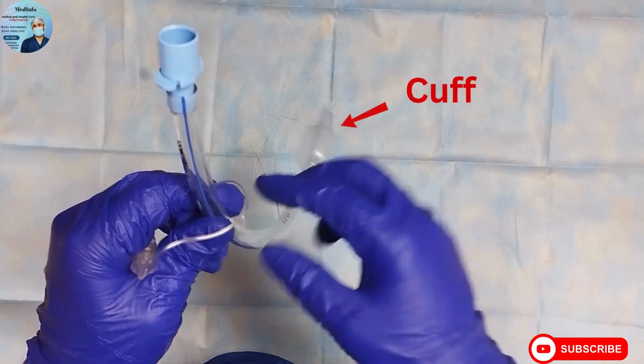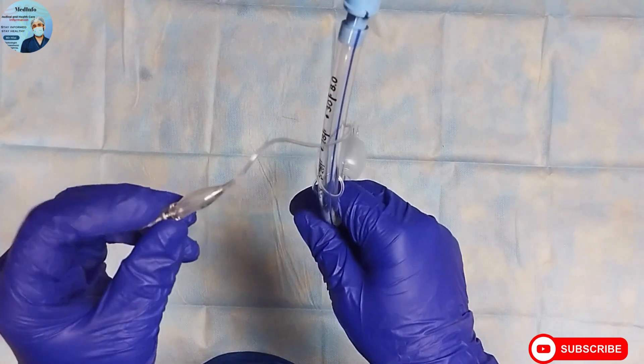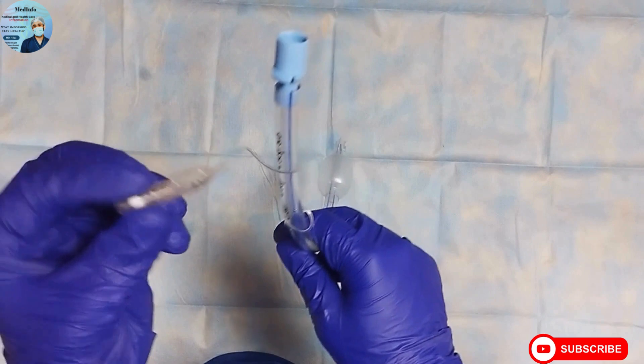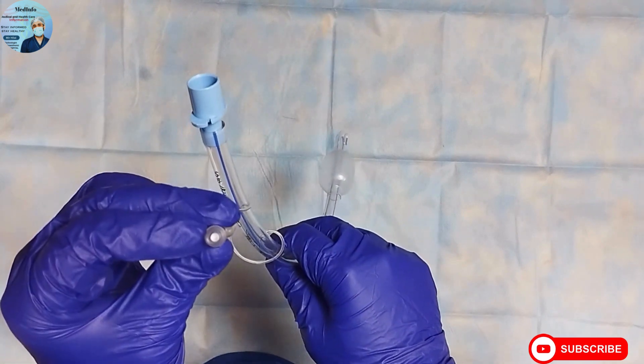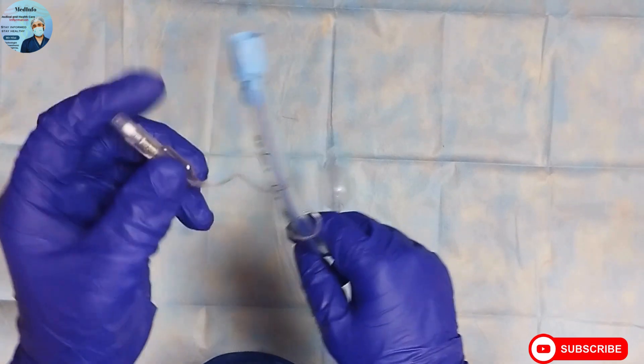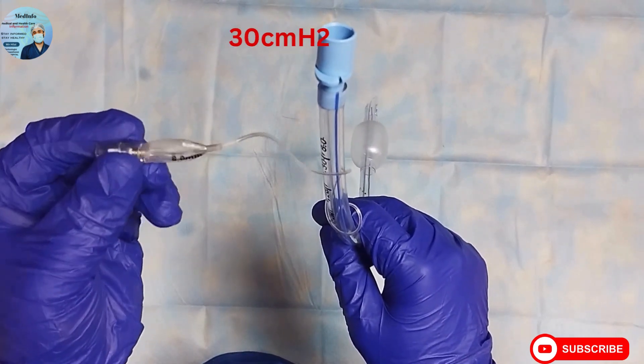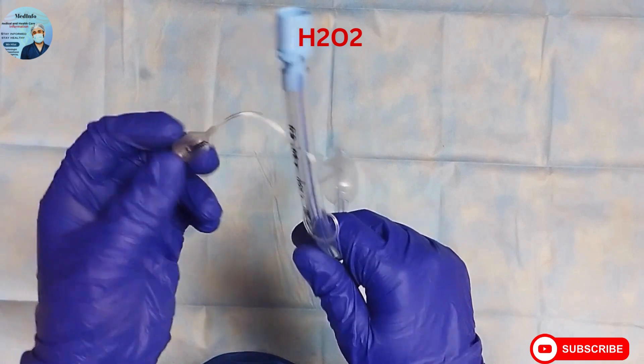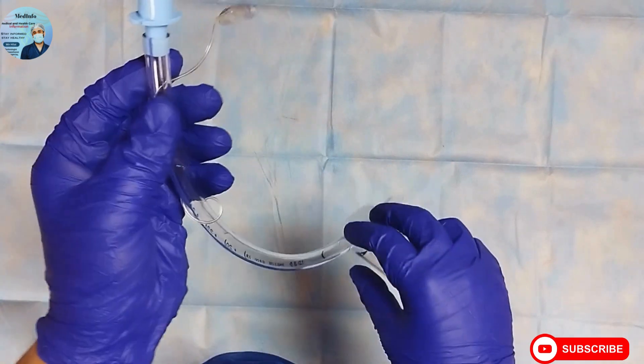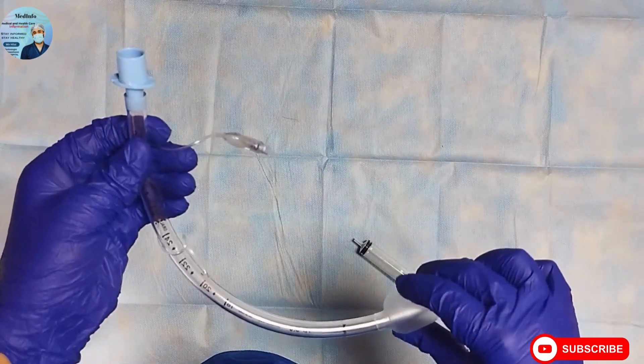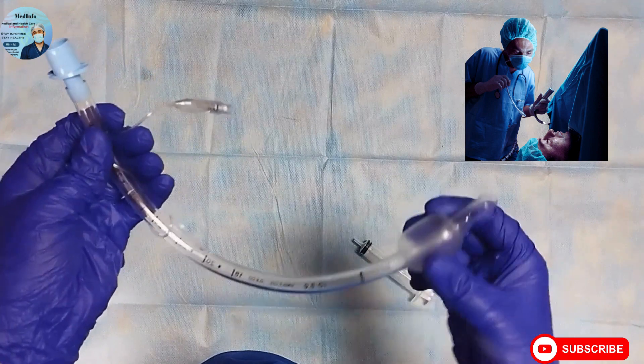Usually 4 to 8ml of air is required to fill the cuff. During cuff inflation, we always need to ensure the cuff pressure to be less than 30 centimeters of water to prevent tracheal ischemia, which can be caused due to high pressure inside the cuff.